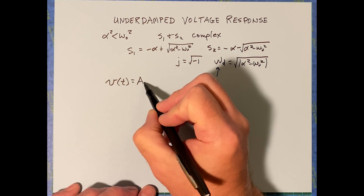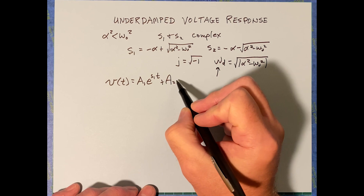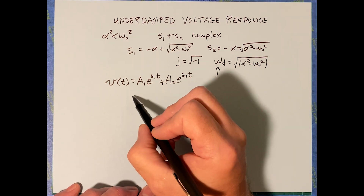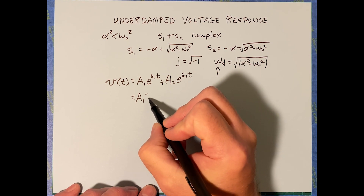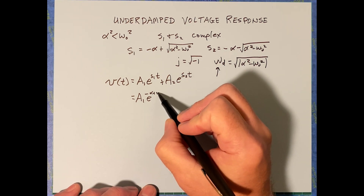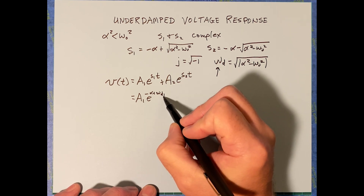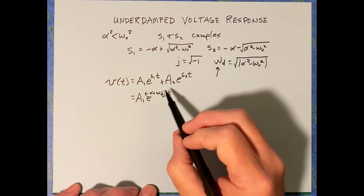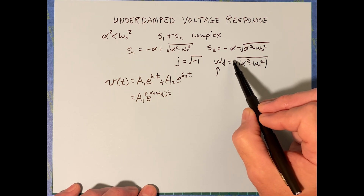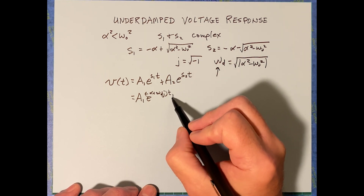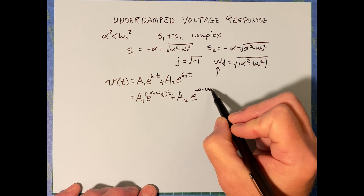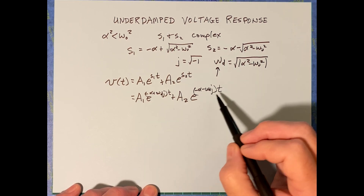Our general solution is V equals A1·e^(S1·t) plus A2·e^(S2·t). What we're going to do now is substitute in for S1 and S2. So this is going to be A1·e^((-alpha + j·omegaD)·t) plus A2·e^((-alpha - j·omegaD)·t). Omega sub D is what's underneath the radical and I factored out the J.